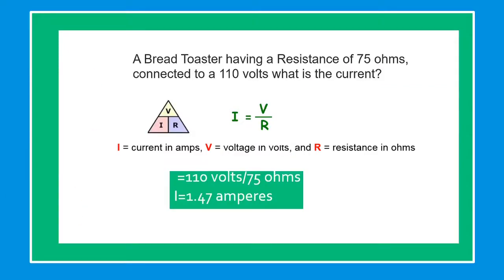In our example in problem solving, a bread toaster having a resistance of 75 ohms connected to a 110 volts, what is the current? By using Ohm's Law, I equals current in amps, V equals voltage in volts, and R equals resistance in ohms. Our voltage is 110 volts divided by 75 ohms, our current is 1.47 amperes.